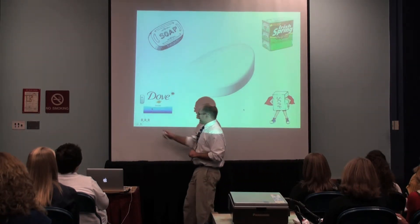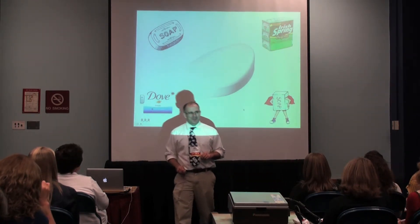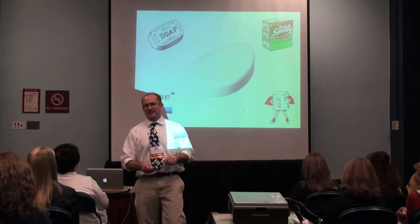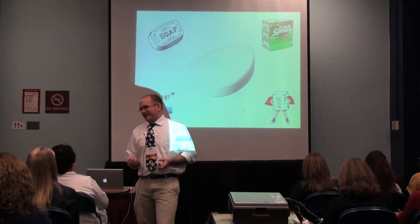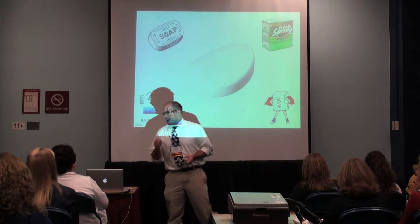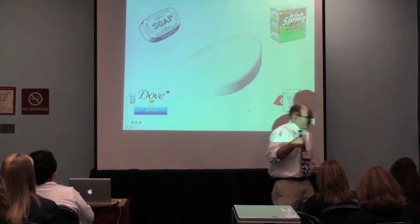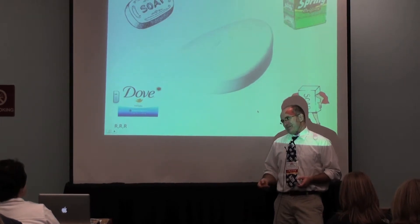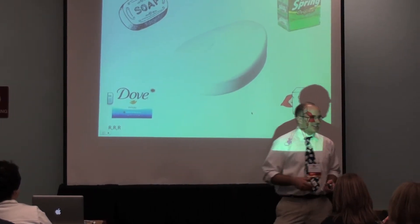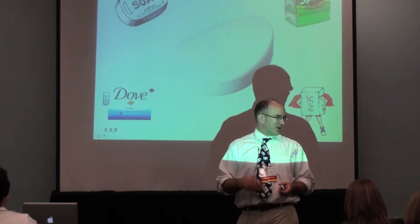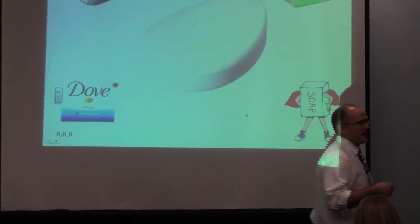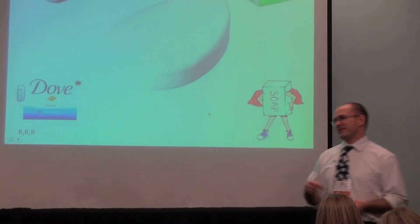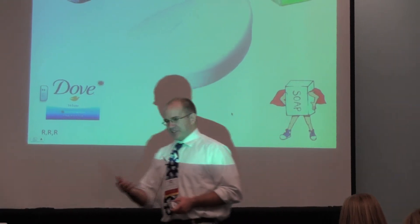When relevance falls short, the third R's got to pick up. The third R is relationships. When we're struggling to find relevance and students don't want to do the math, if we can have that relationship, maybe they don't want to do the math for the math's sake, but they want to do it because they respect you. They have a relationship with you. They want to please you as a teacher, to do their best for you because you've taken the time to get to know them and built some type of connection.